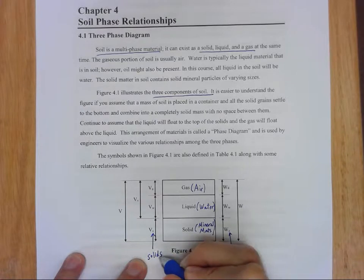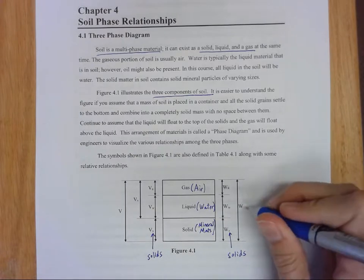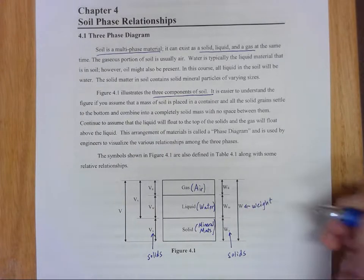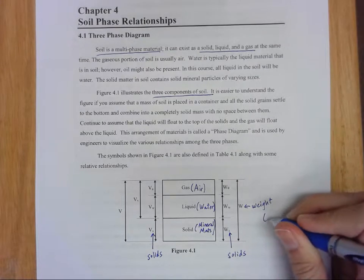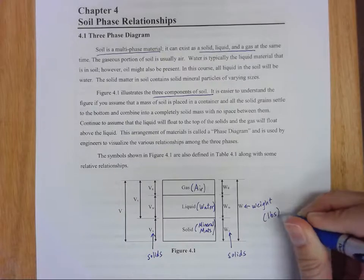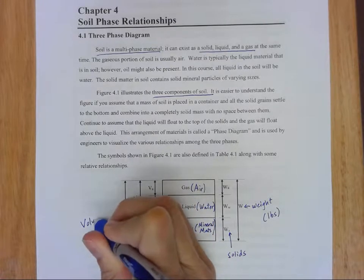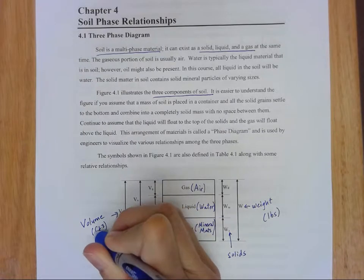And then we have a big letter W here and V on this side. W stands for weight. And in this class when we talk about soil solids and soils, we're going to talk about our weight in pounds. And this is our volume, that's what our big V stands for on this side. And that's going to be measured in cubic feet, feet to the third.